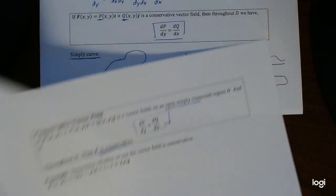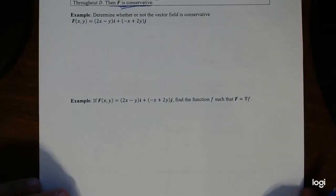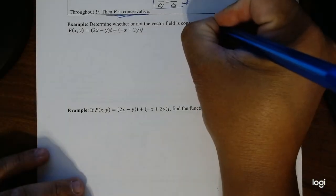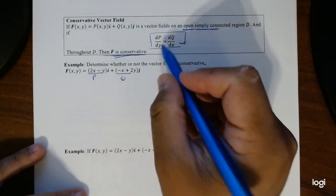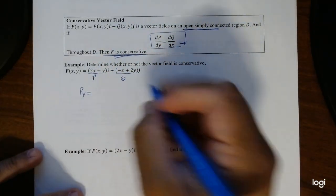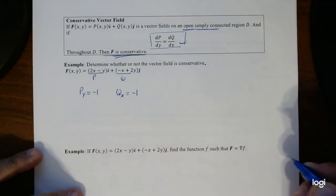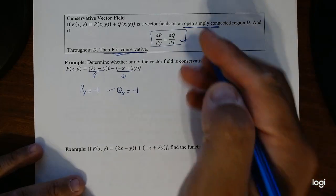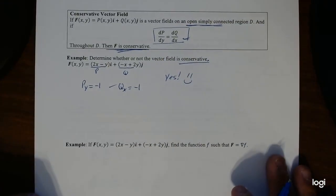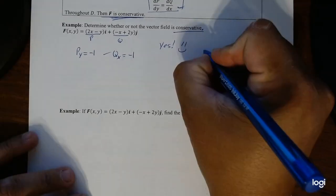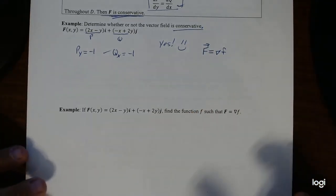Now this line integral becomes very easy to evaluate as long as we can check if it's a conservative vector field. If it is, we can go straight to the simplified formula. Let's try an example: determine whether the vector field is conservative. This is P and that is Q. For P, we take the derivative with respect to y — that gives negative 1. The derivative of Q with respect to x also gives negative 1. They're equal, so this is conservative.